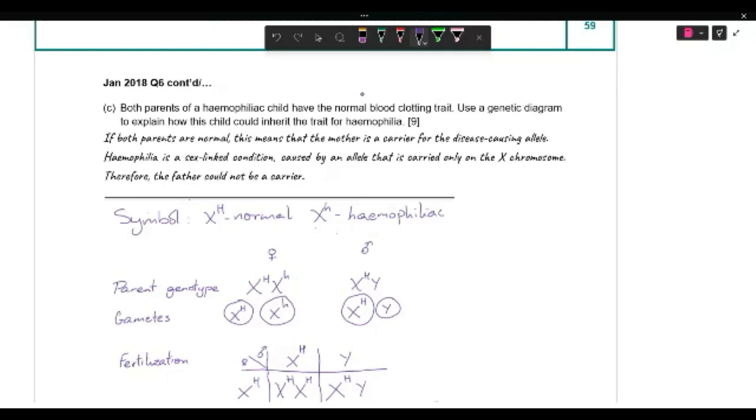Well, it means that if both parents are normal, this means that the mother is a carrier. Because hemophilia is a sex-linked disease. Meaning it's carried only on the X chromosome. So if daddy is normal, it means that his X chromosome is normal because he has one X chromosome.